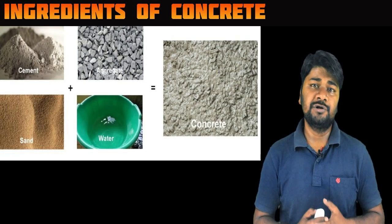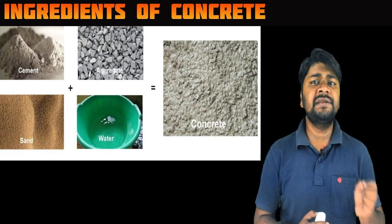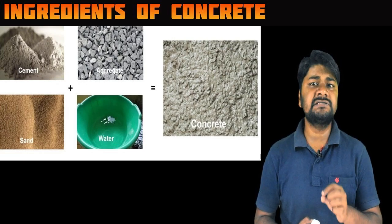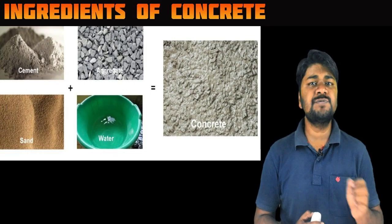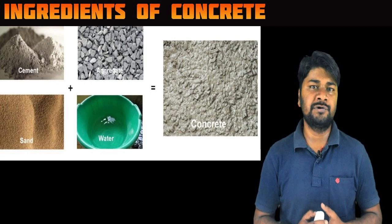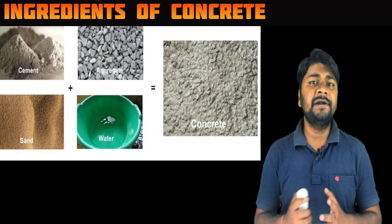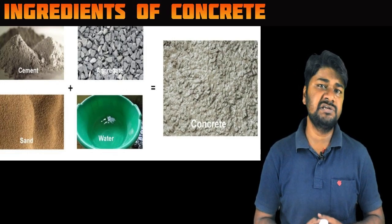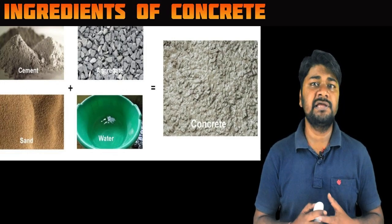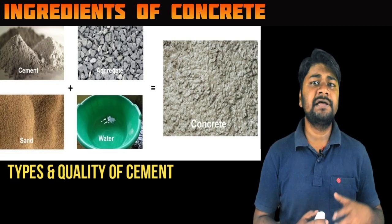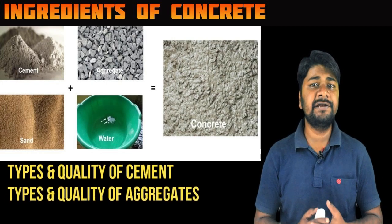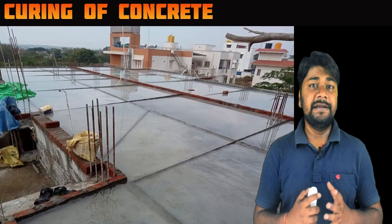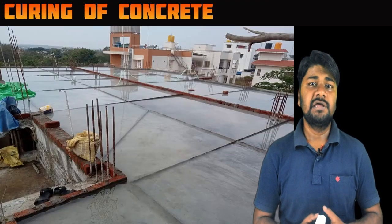Next is ingredients of concrete. The main ingredients of concrete are cement, sand, aggregates, and water. The quality of each material affects the strength of concrete. All materials should fulfill standard criteria for use in concrete, such as the type and quality of cement, the types and quality of aggregate, and the quality of water. Next is curing of concrete.